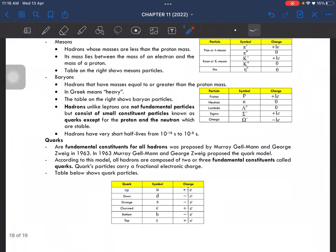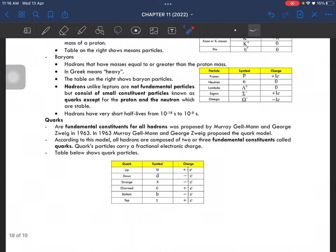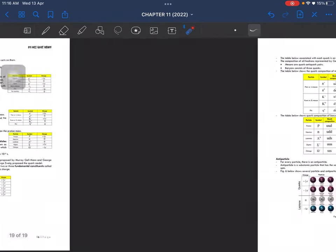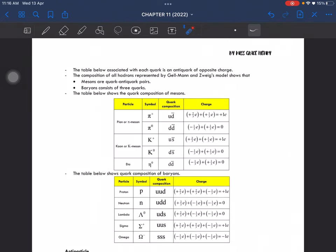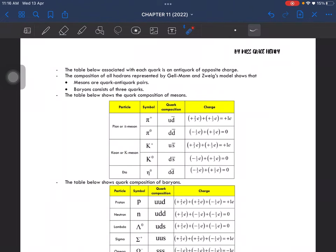Quarks are the fundamental constituents for all hadrons. All hadrons are composed of two or three fundamental constituents called quarks. These are the characteristics. Associated with each quark is an antiquark of opposite charge.